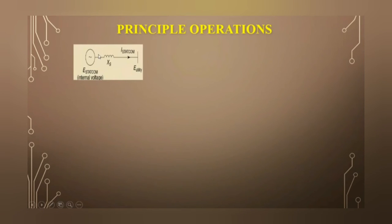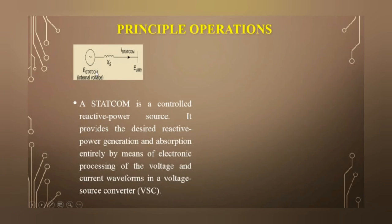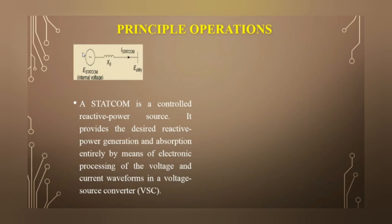This is the basic diagram of StatCom. We can connect the StatCom at the end of the bus. It normally supplies the voltage, so it behaves as a voltage source. The StatCom is a controlled reactive power source — it provides the desired reactive power generation and absorption entirely by means of electronic processing of the voltage and current waveforms in a voltage source converter.